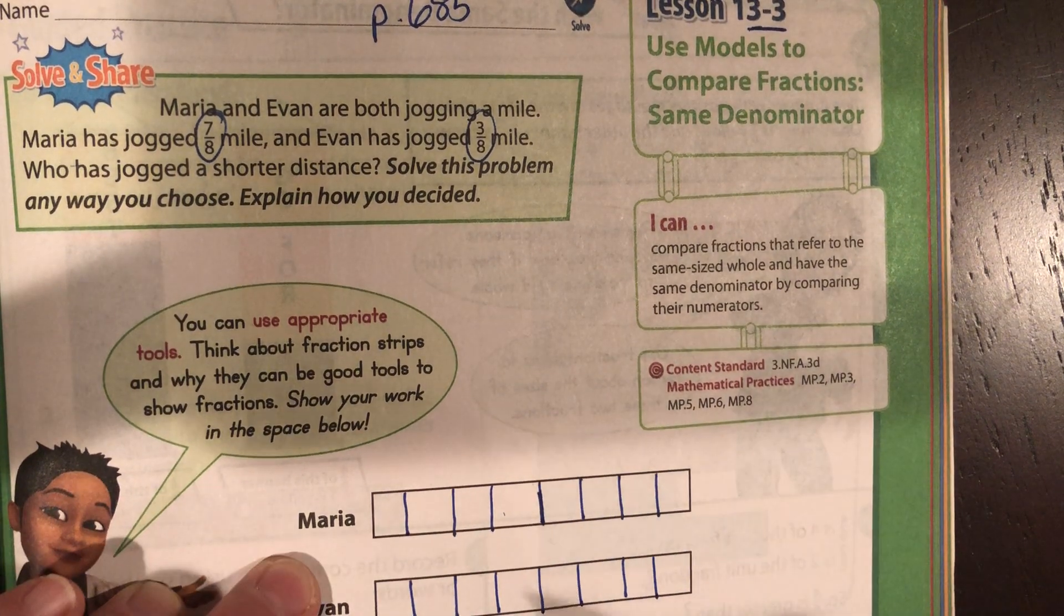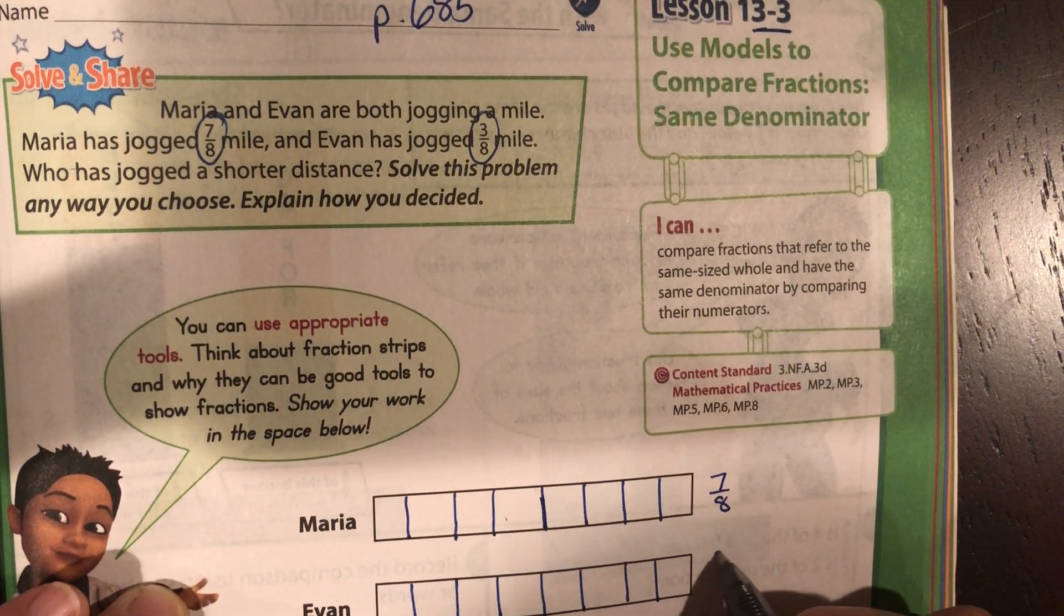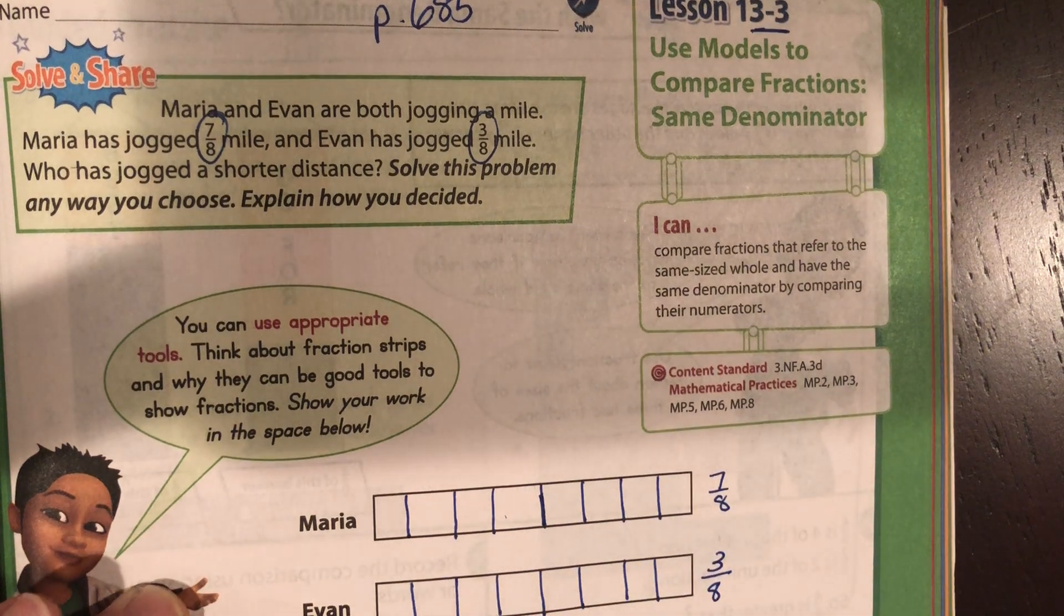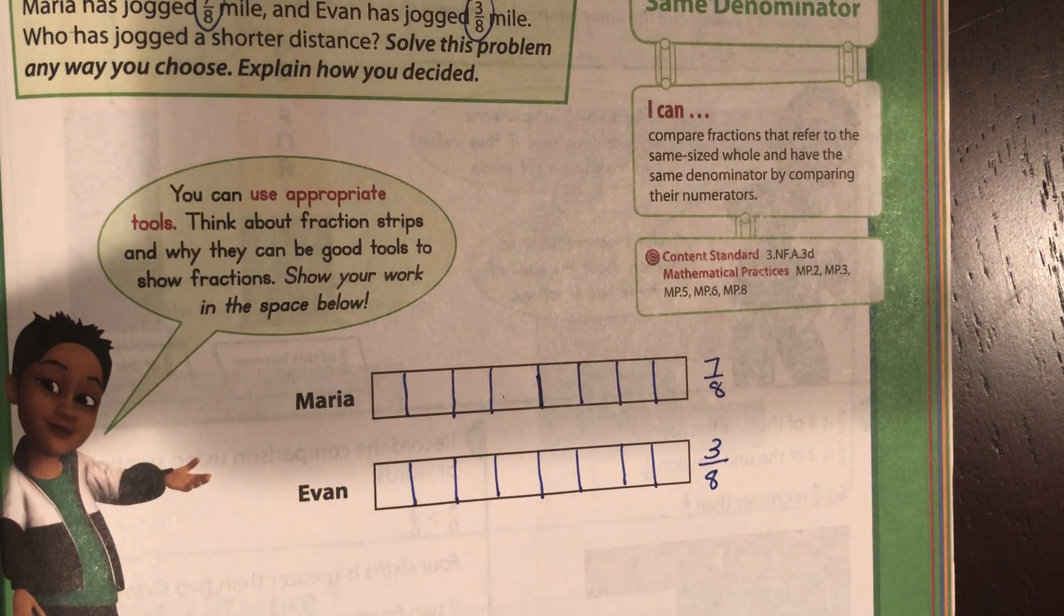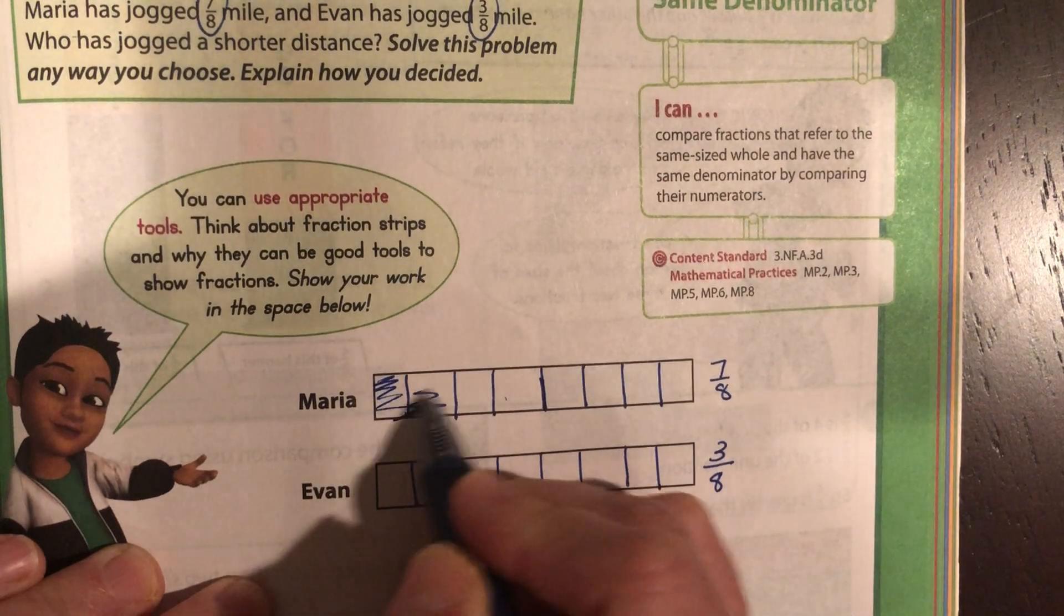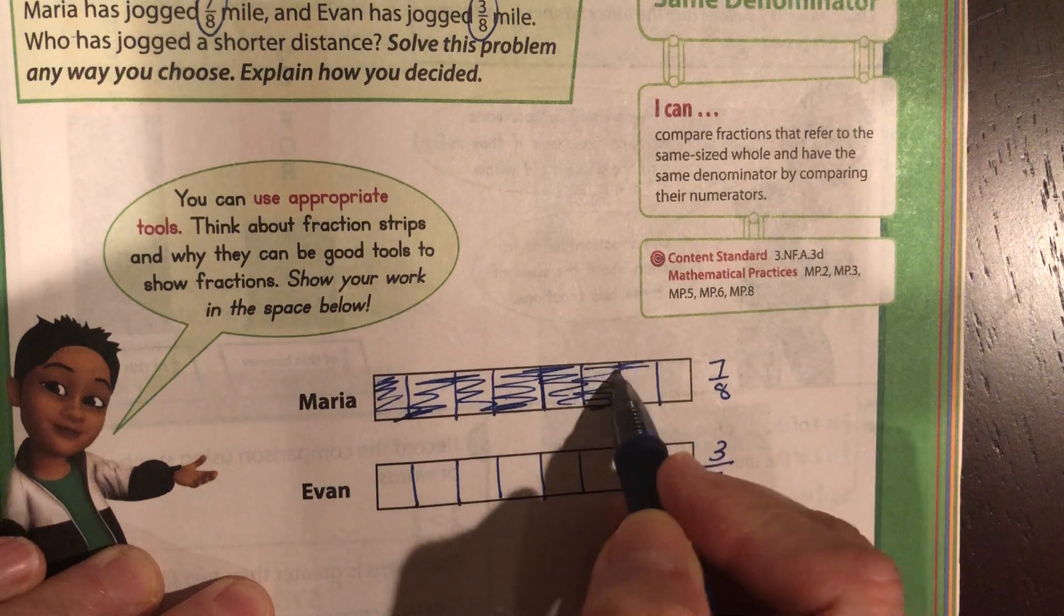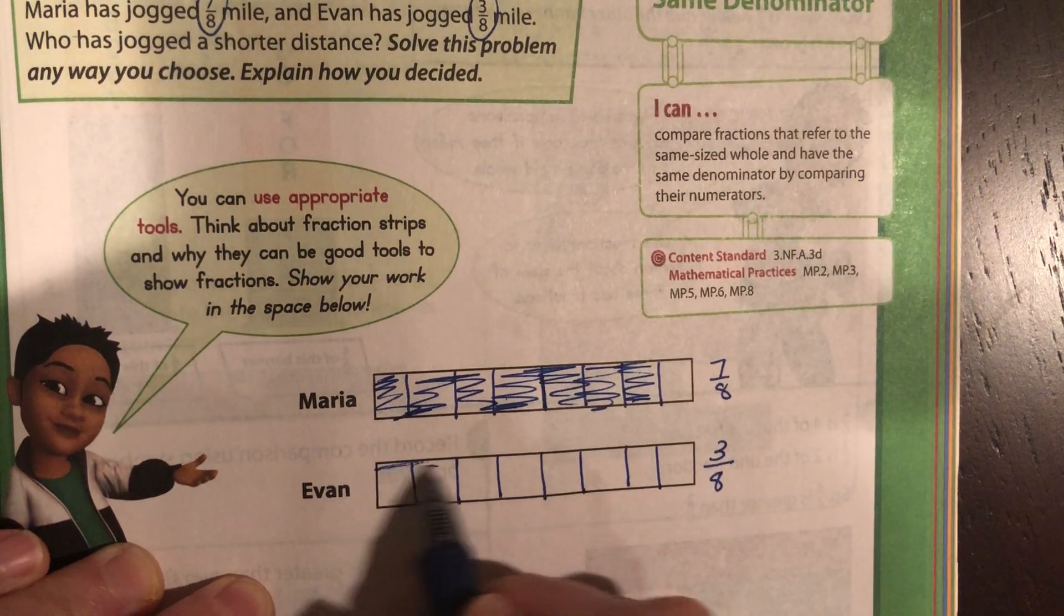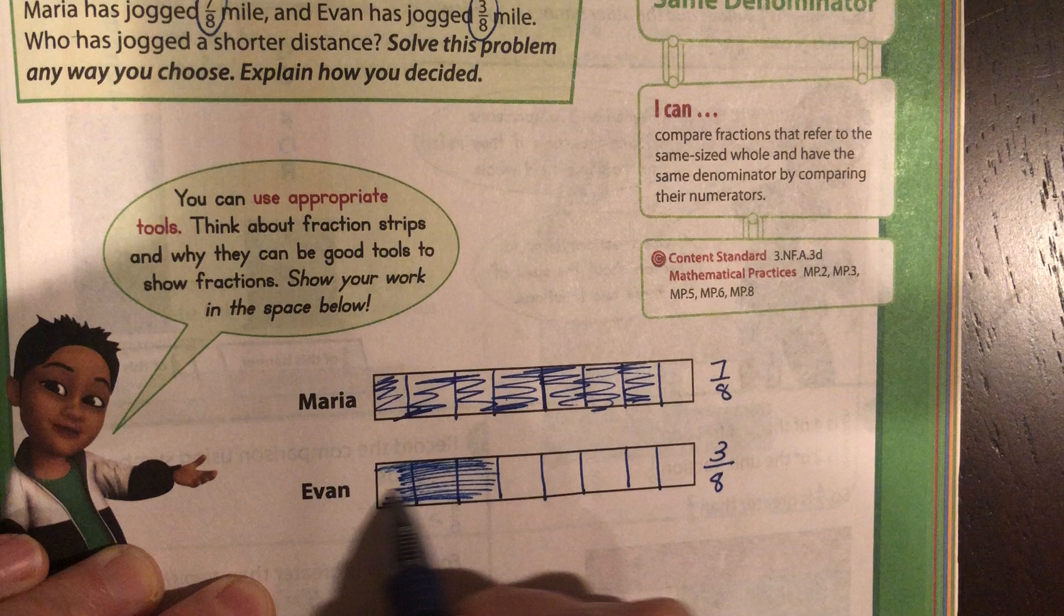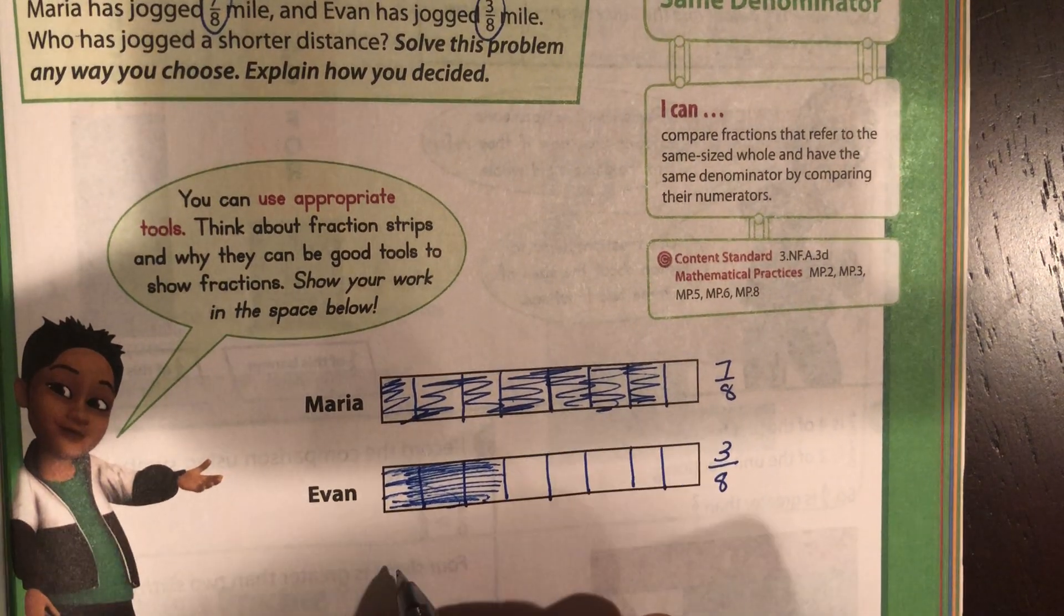So Maria has gone seven-eighths, so shade in seven-eighths. And Evan has gone three-eighths, so shade in three-eighths. Pause it and then come back. Two, three, four, five, six, seven. Evan has gone three-eighths of a mile. So who has gone further? Clearly Maria has.